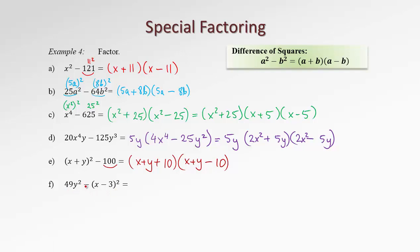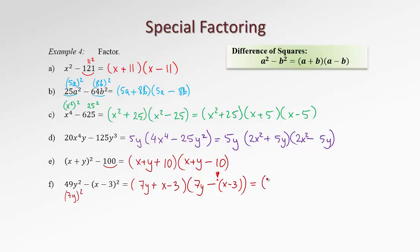The last example in this group is again a difference of two squares, because 49y squared is a square of 7y, and the second term is a square of (x minus 3). We use two brackets with plus and minus. The first term is 7y, and the second term x minus 3 must be placed in a bracket after the minus sign — red alert here. Finally, we rewrite by releasing the inner bracket: (7y plus x minus 3)(7y minus x plus 3).